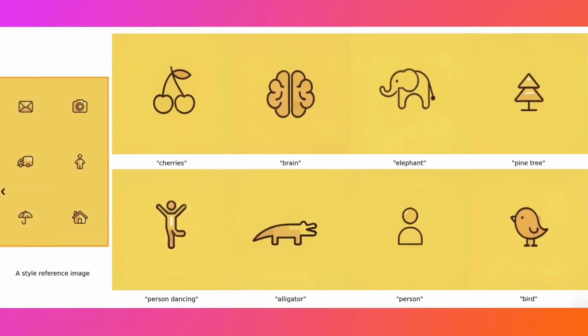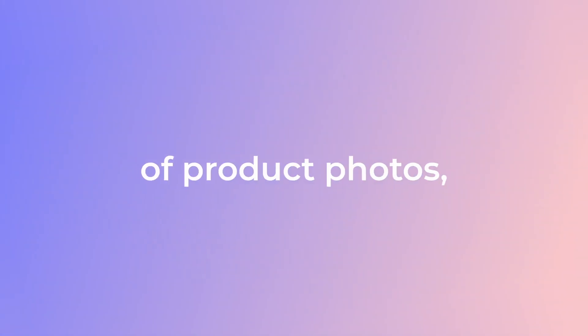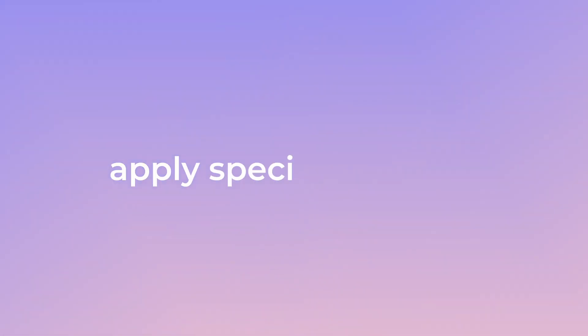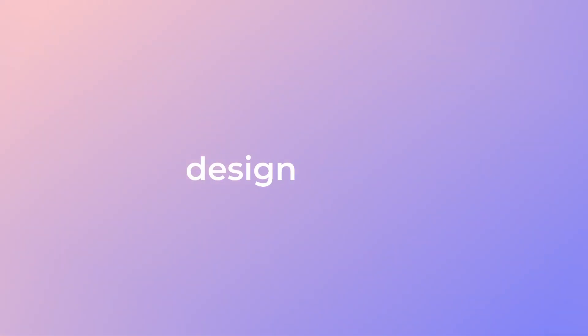This example from the Style Drop GitHub page showcases its versatility. In a nutshell, Style Drop has a wide range of applications. It can be used to create artistic images, change the appearance of product photos, apply a specific style to personal photos, design logos, add humor to images, and more.